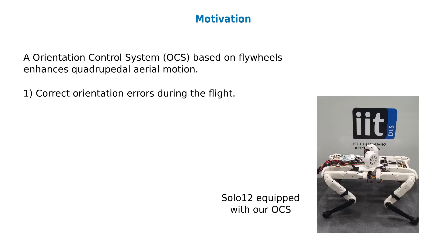Flywheels can correct orientation errors during the flight due to disturbances or tracking inaccuracies. They enable to track angular references for the robot base. Even in presence of contacts, they can enhance the landing phase or stabilize dynamic gaits, reducing trunk oscillations.